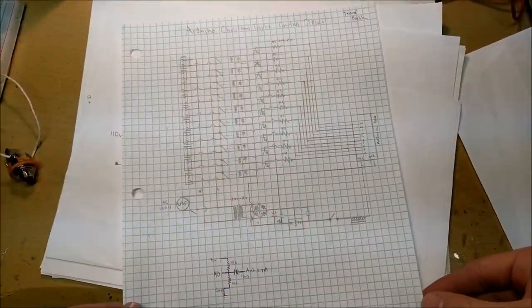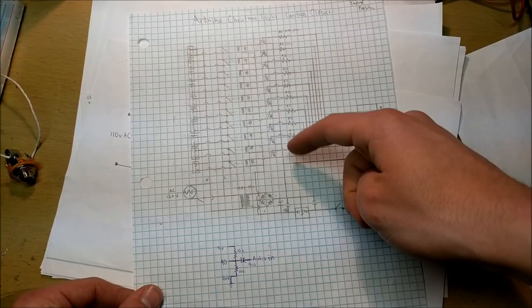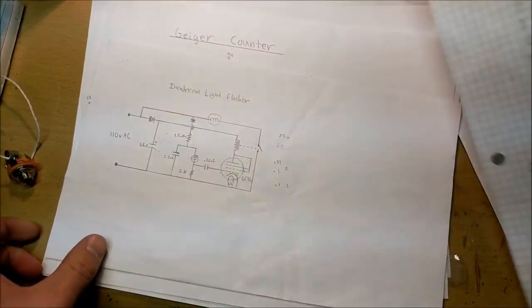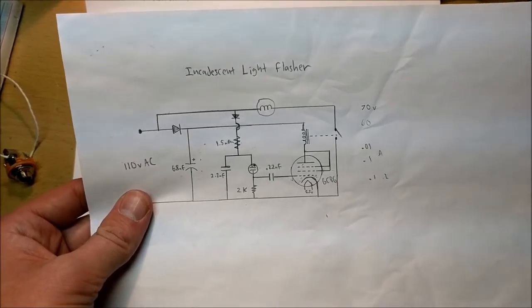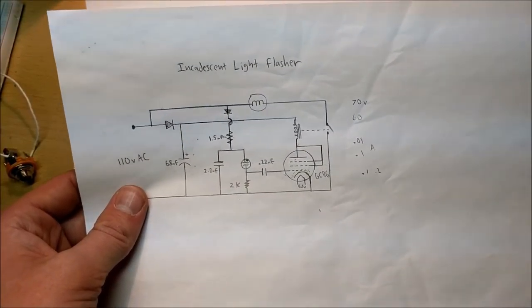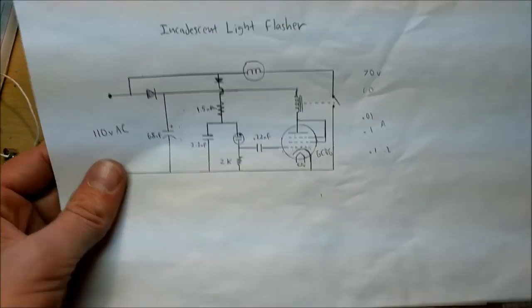This is pretty cool. This is my first schematic from my first ever Christmas light control system with the Arduino and the relays. That was pretty cool. This is my incandescent light flasher from my flashing light prize of 2017. This is pretty cool. I've got my vacuum tube, diode, everything else.